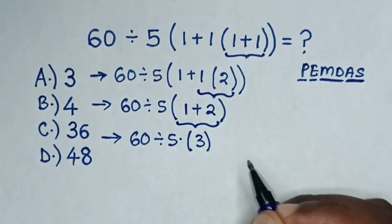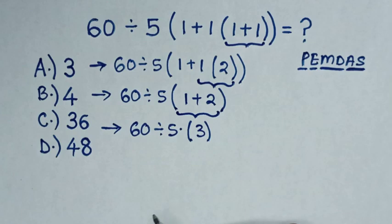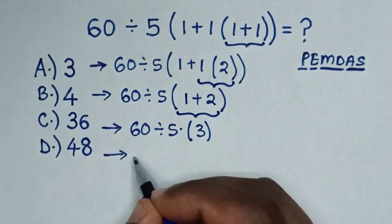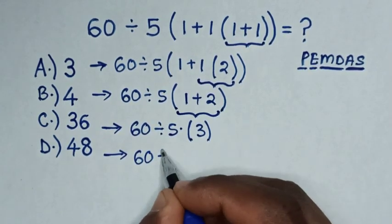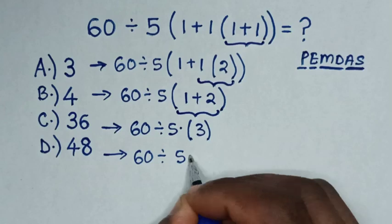Then from here we'll open this bracket, then it will be 60 divided by 5 then times 3.